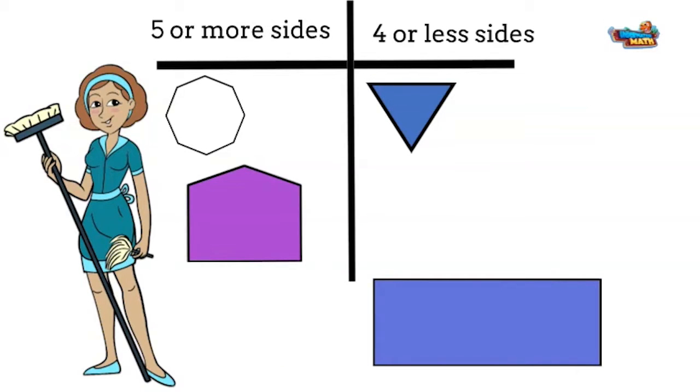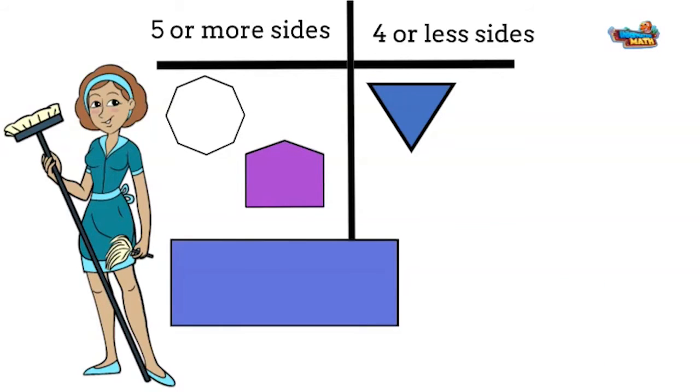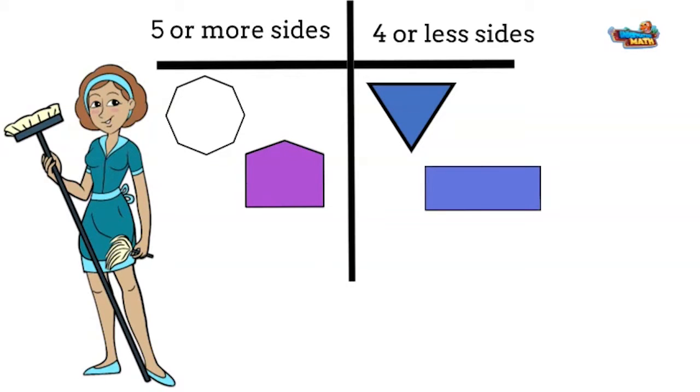It has five sides. It will go under the column with five sides or more. The last shape is a rectangle. Where would you put it? If you said under the column of four sides or fewer, you are correct.